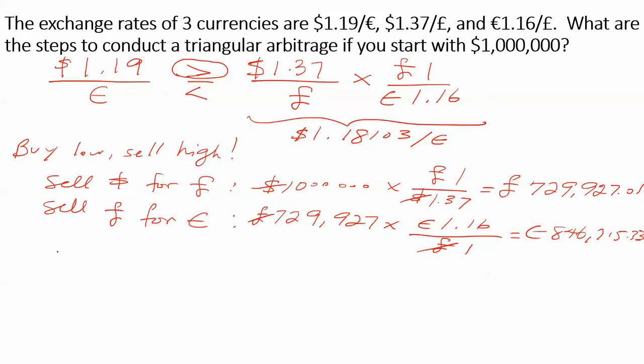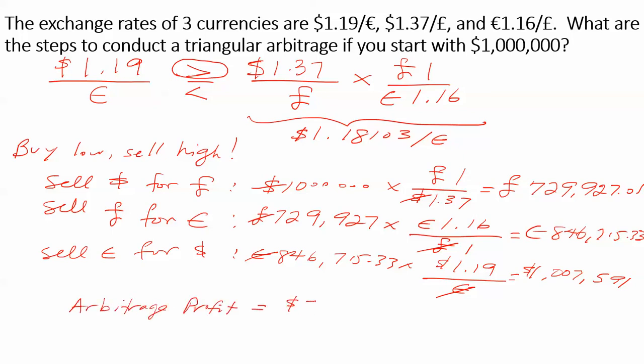Now the last step is to use the last exchange rate, which is the euros to dollars. And then we'll be done because we'll be back with the currency we started with. So now we'll sell the euros for dollars. We will put the dollars in the numerator and euros in the denominator so the euros will cancel out and we'll have dollars in the end. After putting that into our calculator, we see that we will have $1,007,591, which means that we have made an arbitrage profit of $7,591.